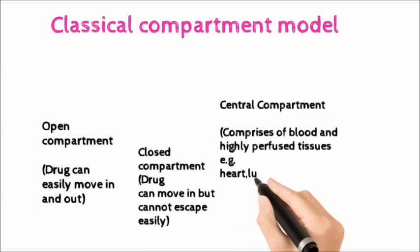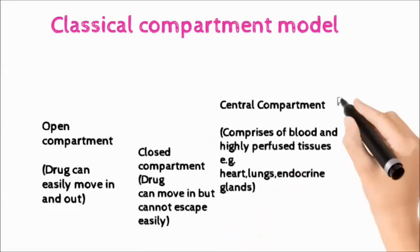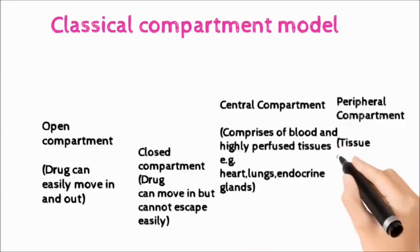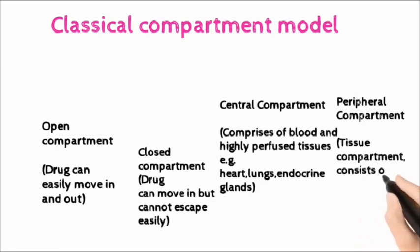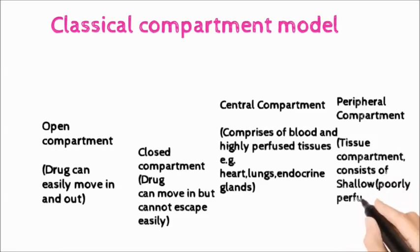Number three is Central Compartment which is also known as Blood Compartment and it comprises of blood and highly perfused tissues. For example, Heart, Lungs, Endocrine Glands.